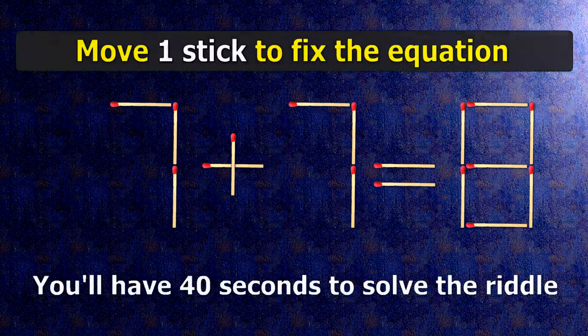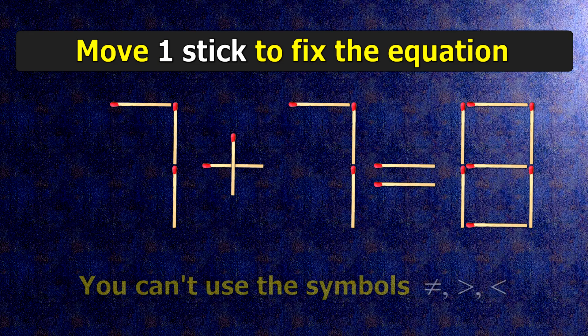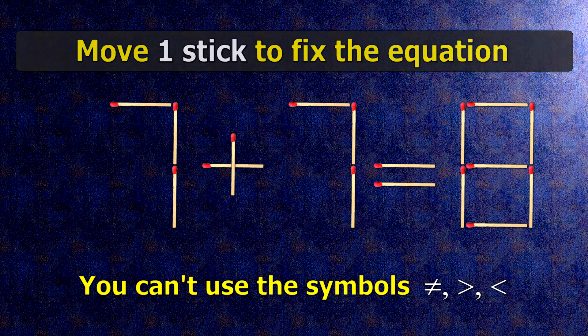We have the equality 7 plus 7 equals 8. Our equality is wrong. We need to move one match to make our equality correct.